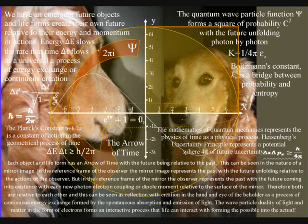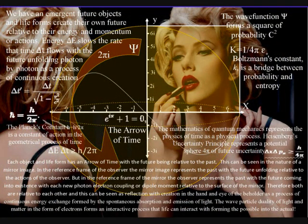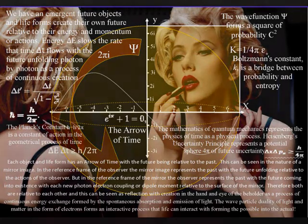But in the reference frame of the mirror, the observer represents the past, with the future coming into existence with each new photon-electron coupling, or dipole moment, relative to the surface of the mirror. Therefore both are relative to each other, and this can be seen as reflection, with creation in the hand and eye of the beholder, as a process of continuous energy exchange, formed by the spontaneous absorption and emission of light.